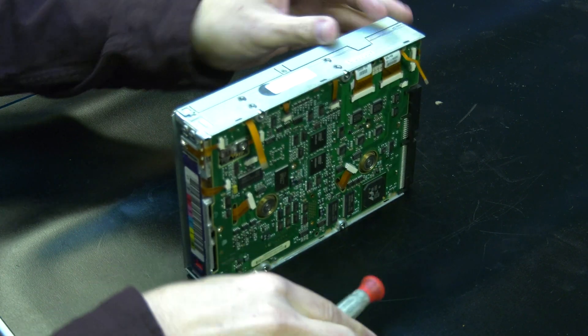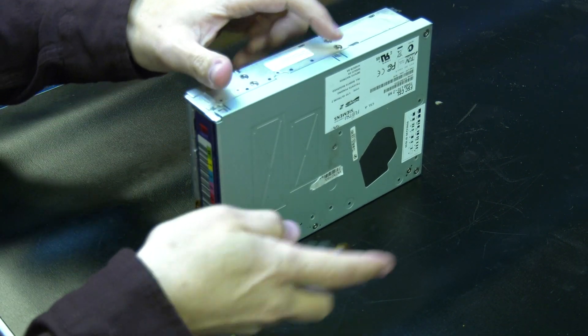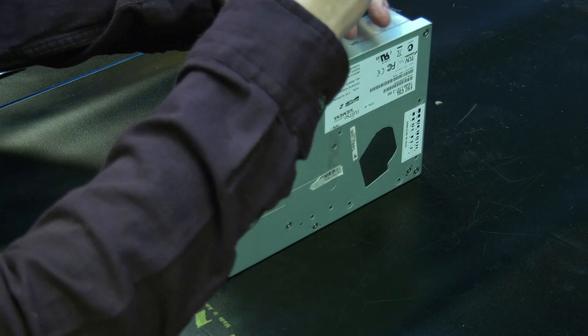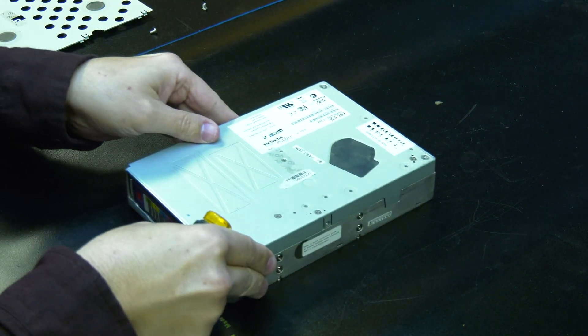Once they are undone, flip the drive on its right side and remove the side screw for the top cover. Then flip the drive onto the left side and remove the other side screw for the top cover. Last, you will need to remove the three screws in the top of the top cover that hold it on.